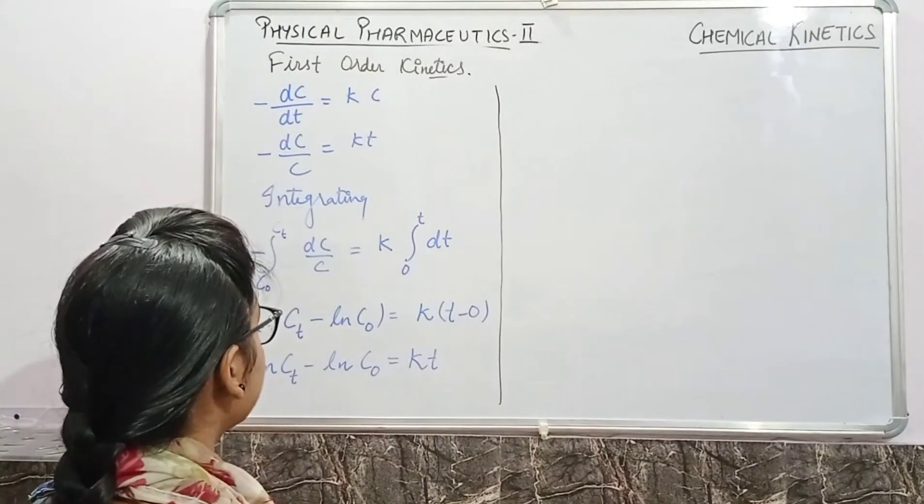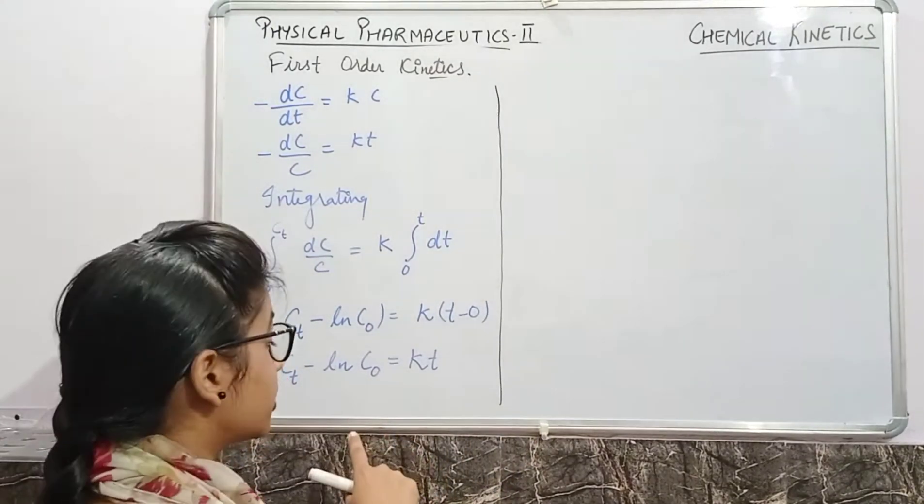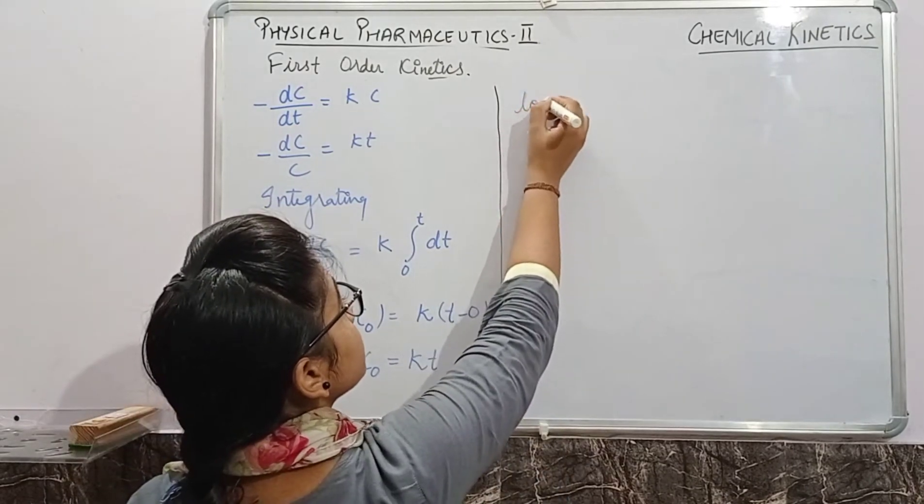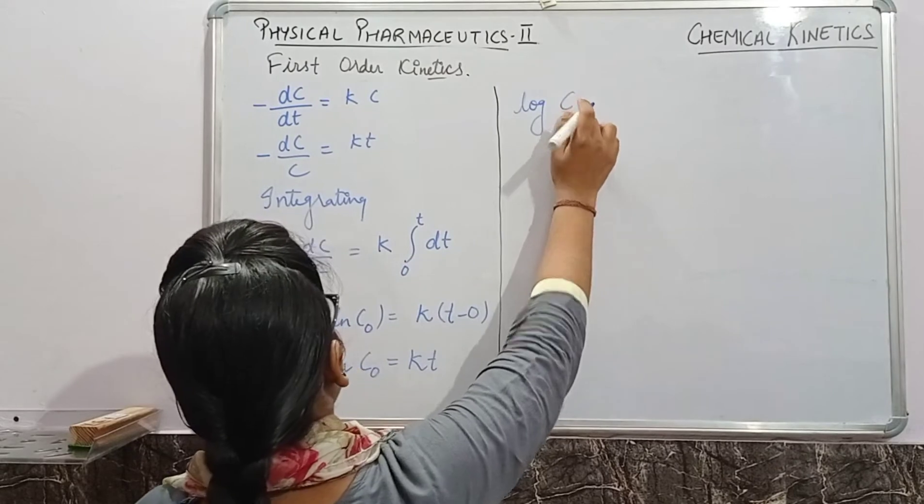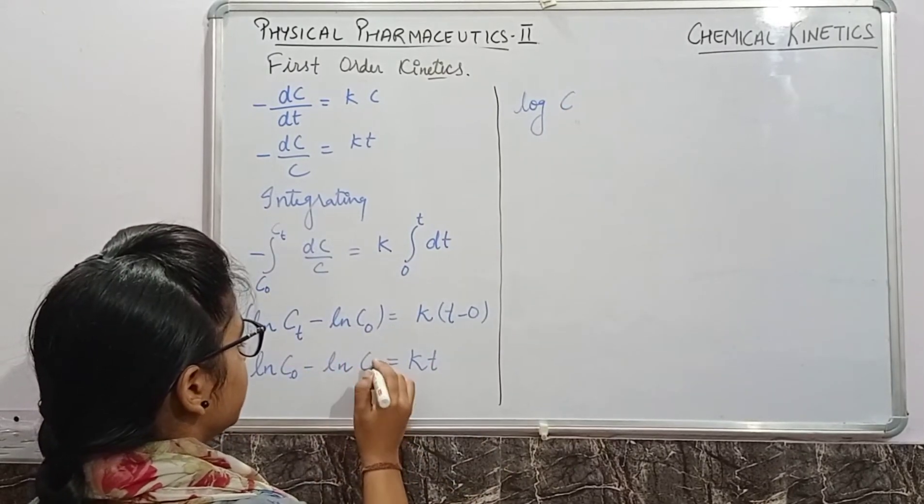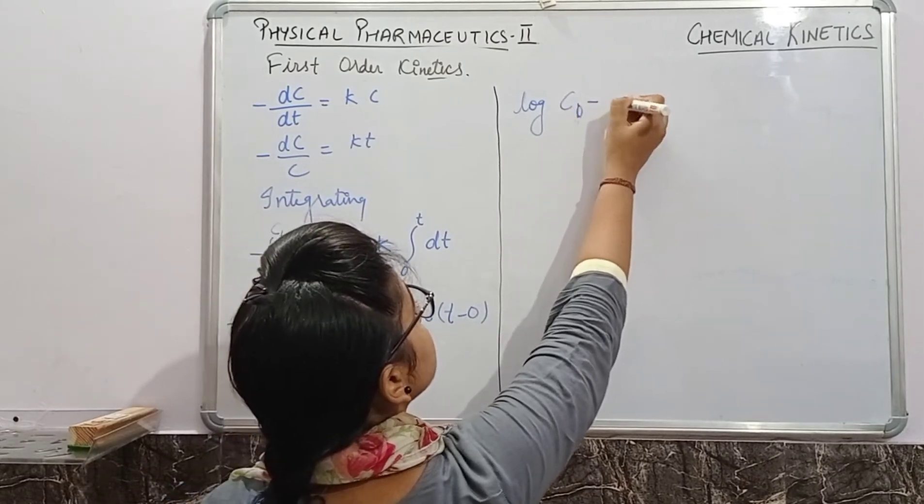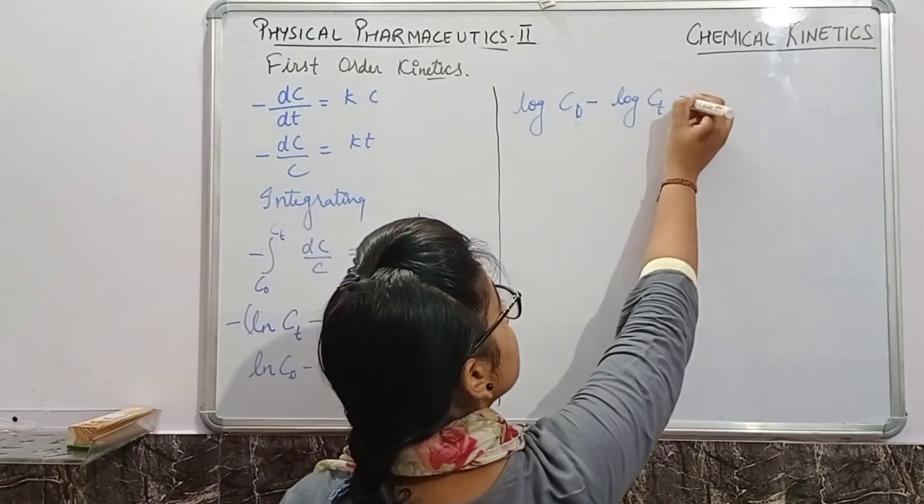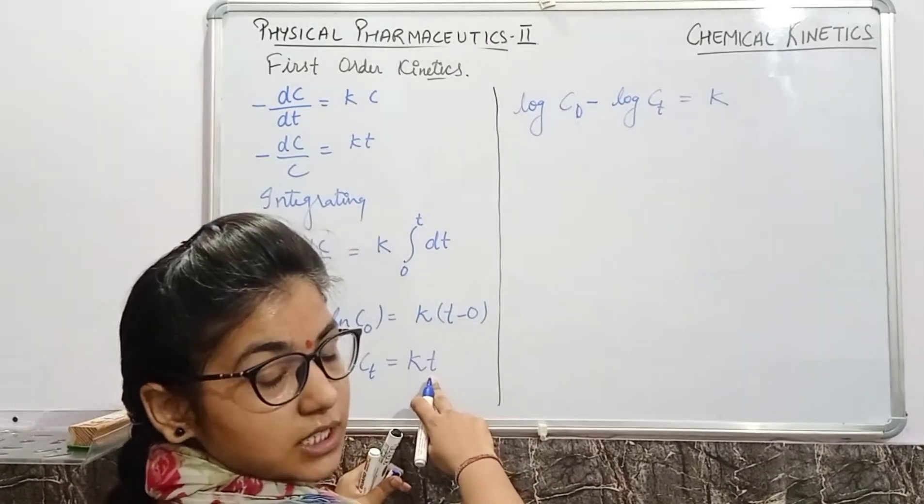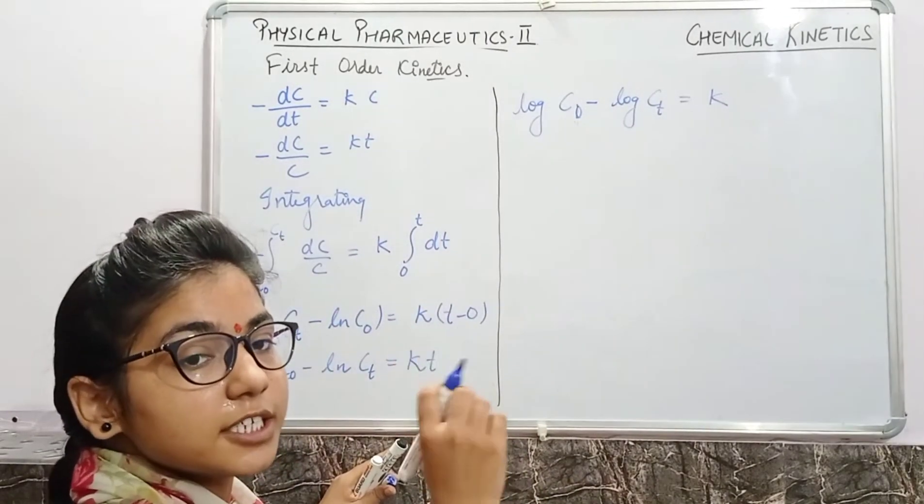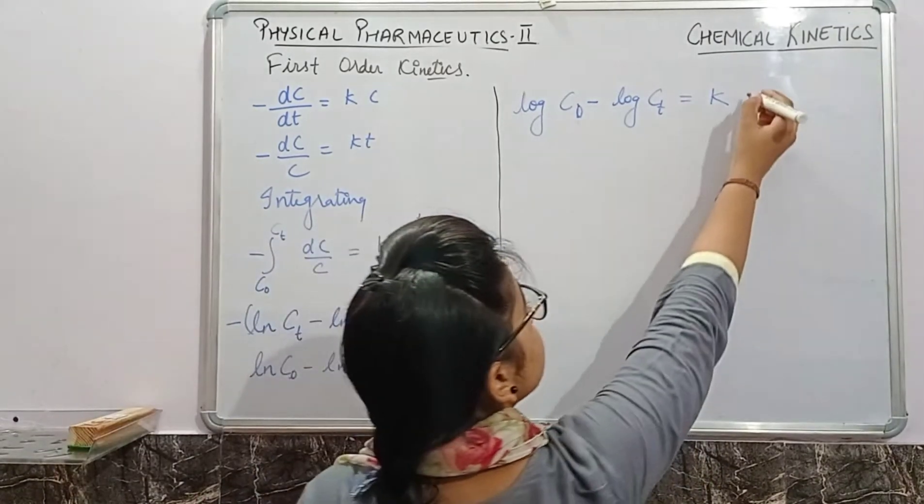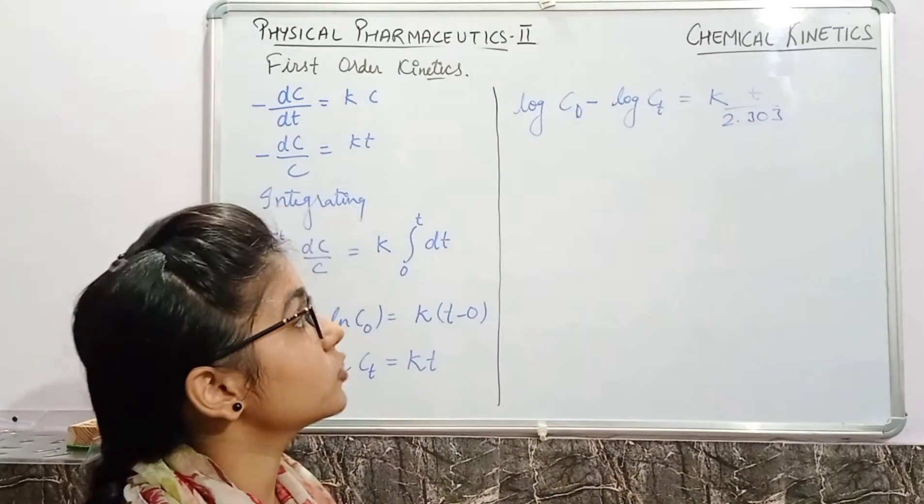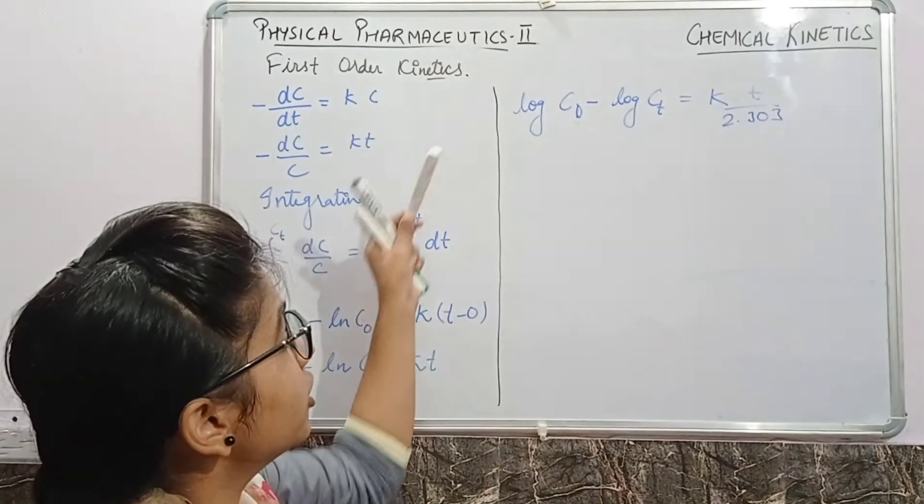After that, you have to convert it into the natural log to the simple log, log base 10. When we convert it, it will become log(c naught) minus log(ct) equals kt divided by 2.303, the value when you convert the log base 10.